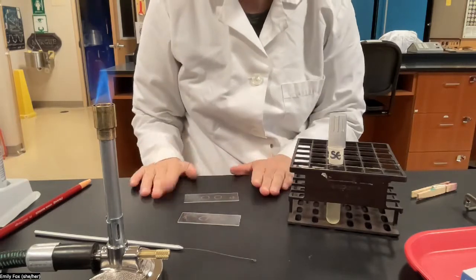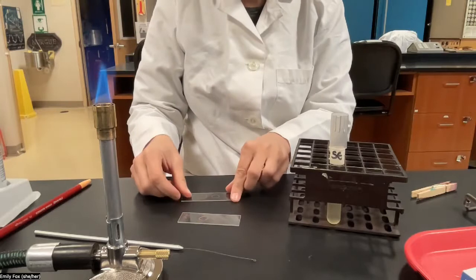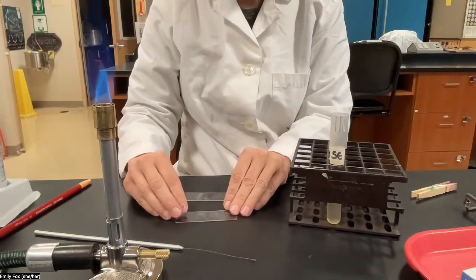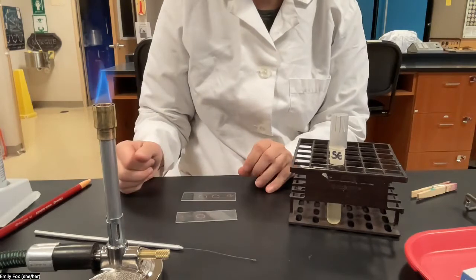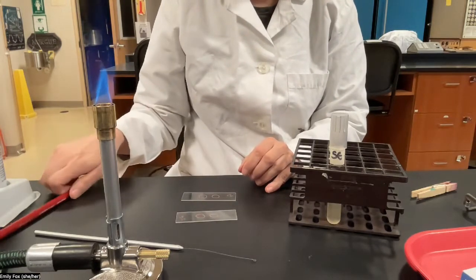And now this part's really important. You're going to turn the slides over so that the part you wrote on is facing down. We want to put the bacteria on the nice clean side so that when we stain them, the wax crayon doesn't get in with the cells.